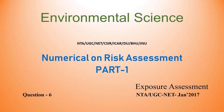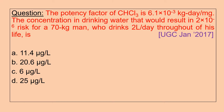Hello friends, welcome to my YouTube channel on environmental science. The potency factor of CHCl3 is 6.1 into 10 to the power minus 3 kg·day per milligram. The concentration in drinking water that would result in 2 into 10 to the power minus 6 risk for a 70 kg adult man.